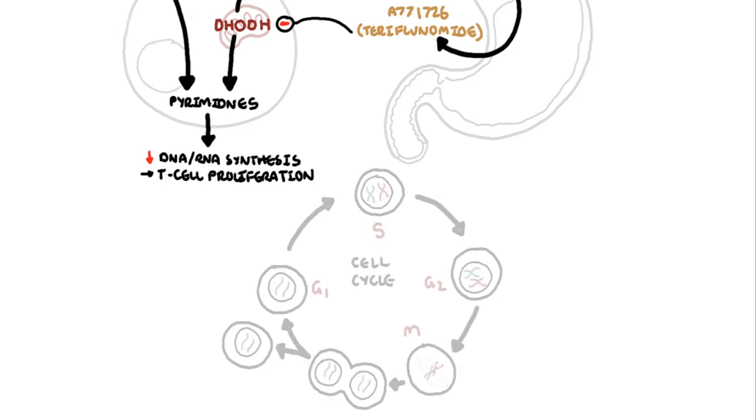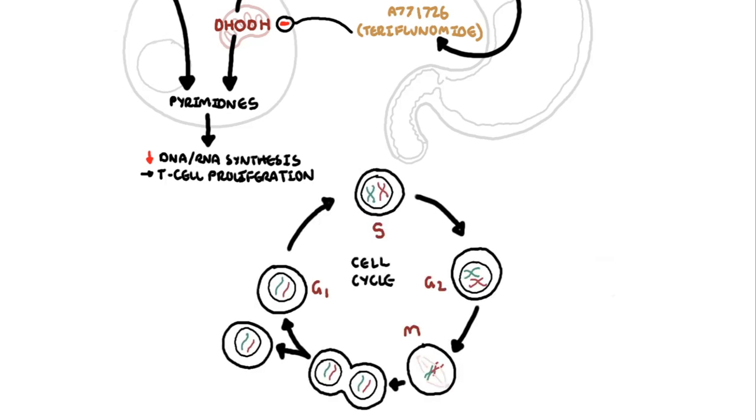Because leflunomide inhibits pyrimidine synthesis, it thus prevents the T-cell, in this case the autoimmune T-cell, from progressing to the S-phase where DNA replication occurs.